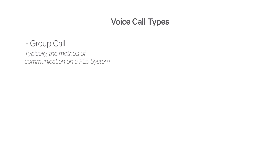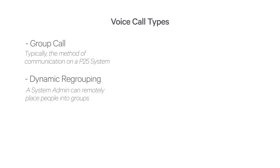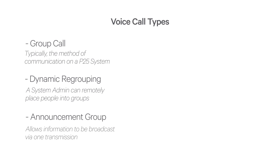Some systems support dynamic regrouping, where a system administrator can remotely place people into groups as operational needs arise. An announcement group is a predefined amalgamation of different talk groups into a single large group call. This allows important messages to get out to multiple teams in one transmission rather than having to be repeated multiple times.